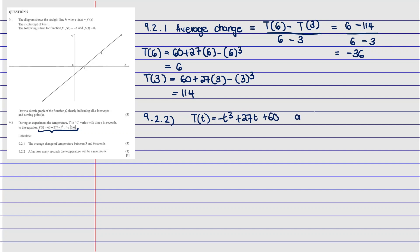Since a is less than zero, we know the cubic graph goes down then up — it has a minimum and a maximum turning point. We are looking for when T is at its maximum, which corresponds to the higher turning point. We need the t-value at that maximum, so we look for the turning points.